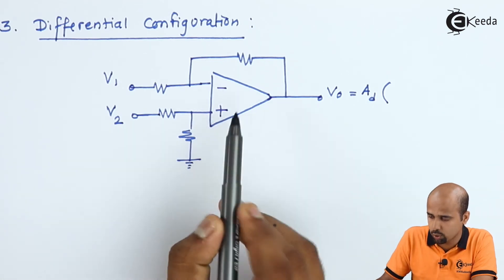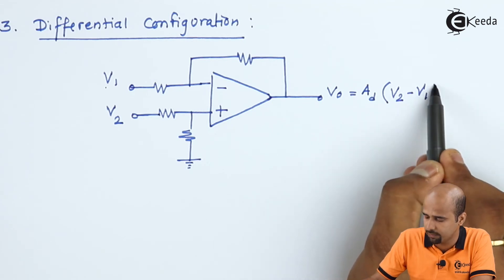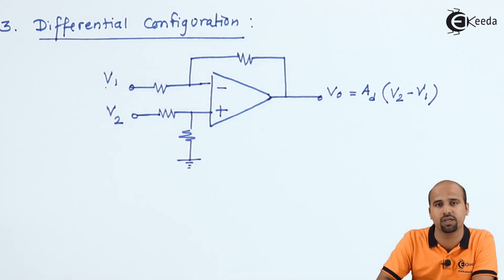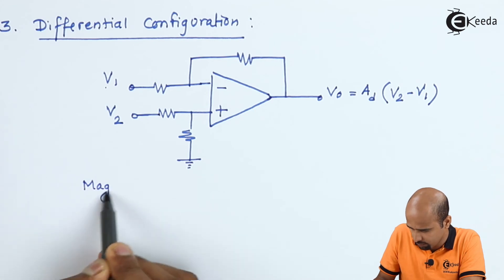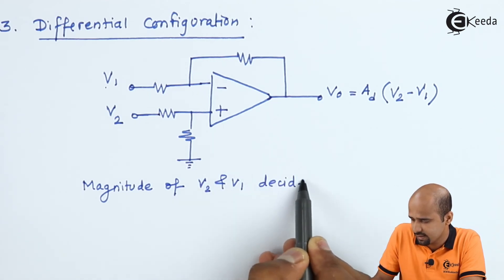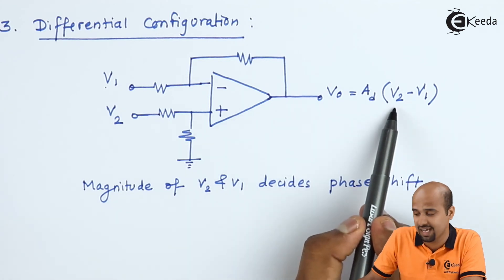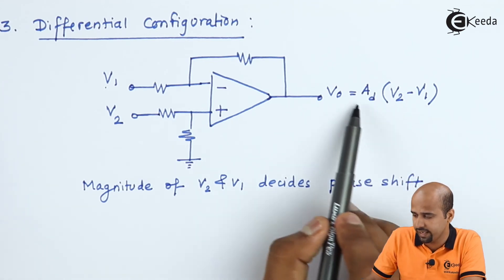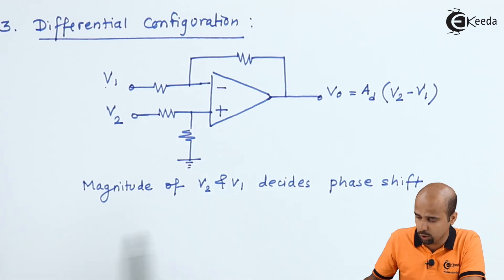According to the negative sign convention, the output is written as Ad multiplied by (v2 minus v1). This is the output of the differential configuration. Here, if v2 is greater than v1 there is no phase shift. However, if v2 is less than v1, then v2 minus v1 becomes negative, meaning v0 is also negative, which shows a 180-degree phase shift. So, depending on the magnitudes of v2 and v1, the phase shift will be either 0 degrees or 180 degrees.